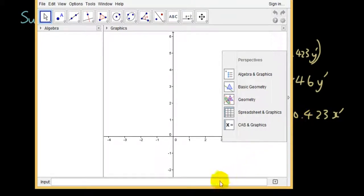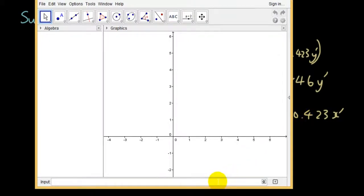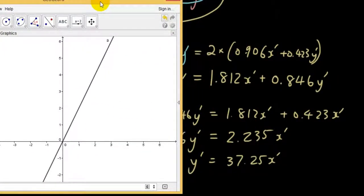So my original equation is y equals 2x, and my new equation is y equals 37.25x.